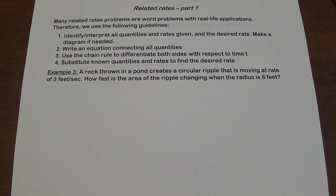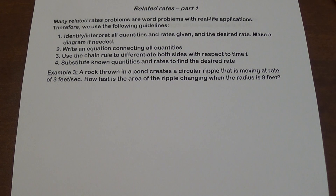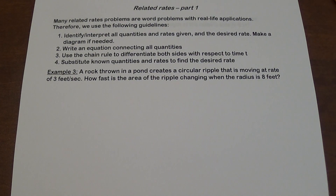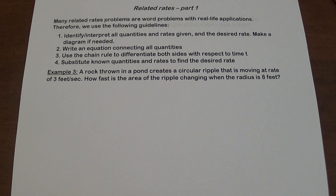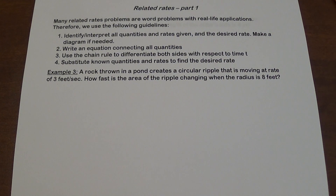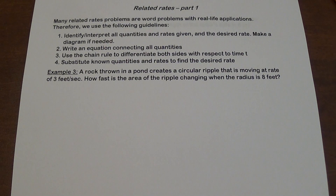Most related rates problems are going to be word problems. Here is the process we follow: identify the quantities given and the quantities we're looking for, including the rates. Make a diagram if needed. Write an equation connecting the quantities, then use the chain rule to differentiate both sides with respect to time. Finally, substitute the known quantities and rates to find the desired rate.